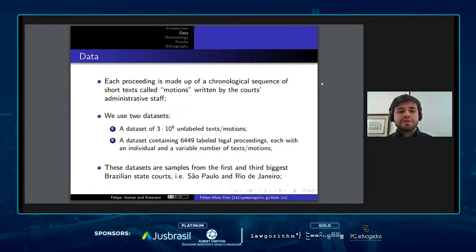Let's talk about our data. Each proceeding in our case is made up of a chronological sequence of short texts. We are basically dealing with a sequence of text classification. And we have two data sets. The first one is a data set of around 3 million unlabeled texts that we use to train our unsupervised language models.